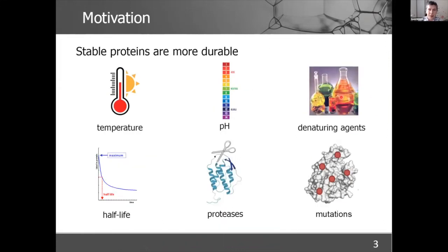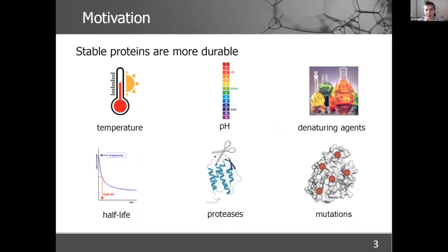Stability is one of the basic properties of all proteins. If you want to use your protein in basic science or applied technologies, you need it stable enough. Stable proteins can withstand very difficult conditions like high temperatures, varying pH, and additives like denaturing agents.